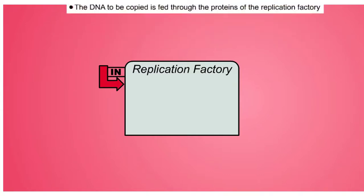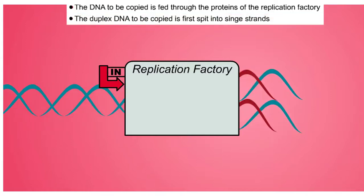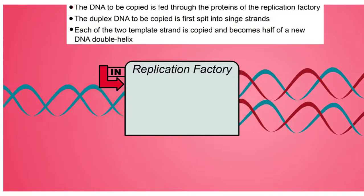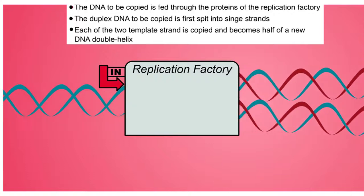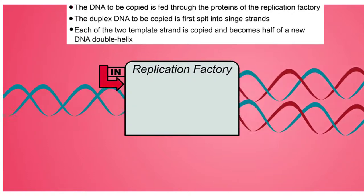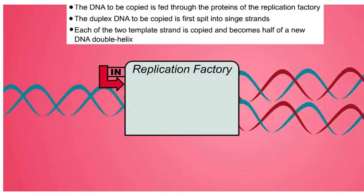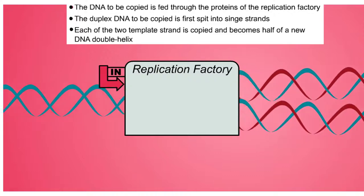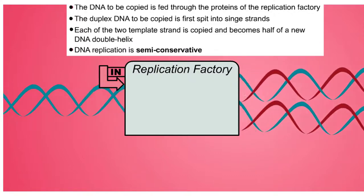The DNA to be copied is fed through the factory much as a reel of film is fed through a movie projector. The incoming DNA double helix is split into two single strands and each original single strand becomes half of a new DNA double helix. Because each resulting DNA double helix retains one strand of the original DNA, DNA replication is said to be semi-conservative.